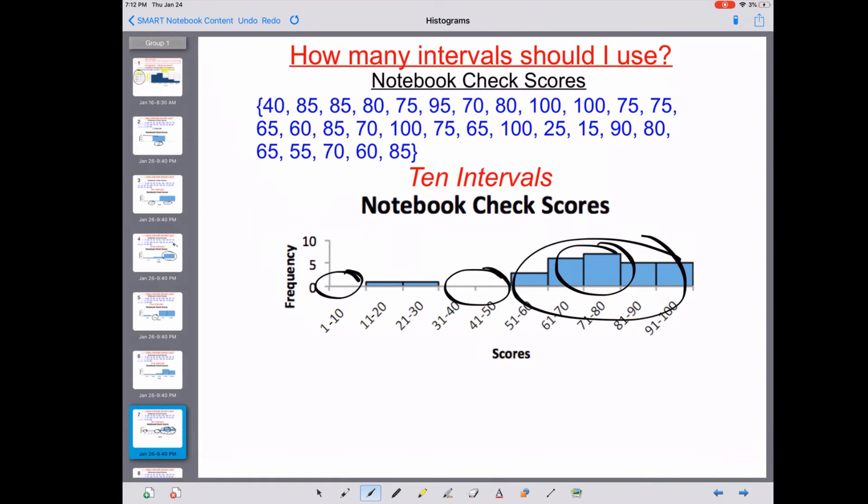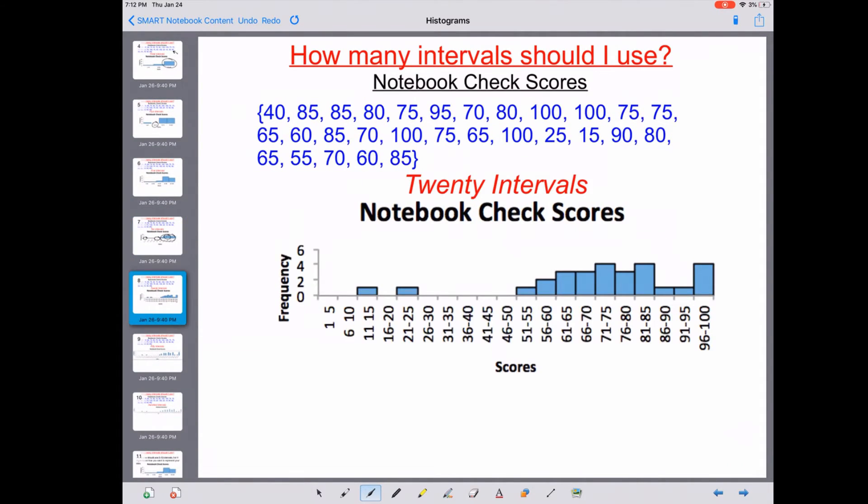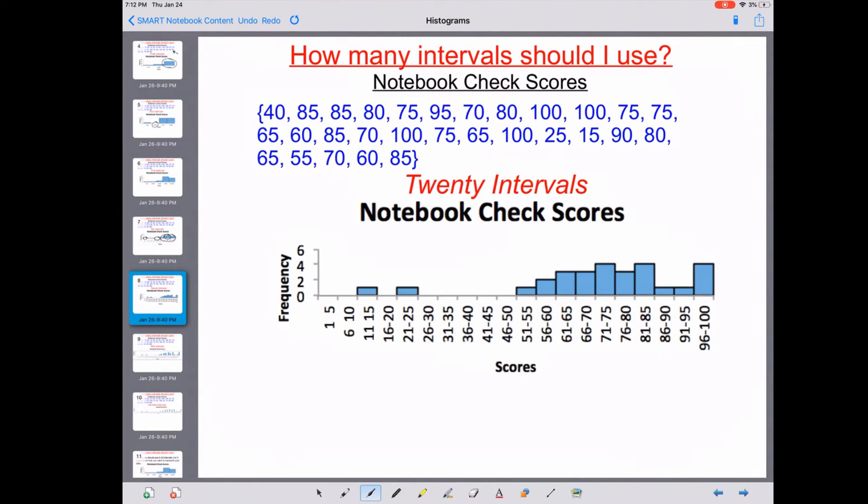Let's move on forward. This is 20 intervals. There's not really a difference between the 10 intervals and the 20 intervals with shape anyway, except for maybe right here. All we do is we really just made all this data spread out with all these gaps. So 20 intervals might be too many.